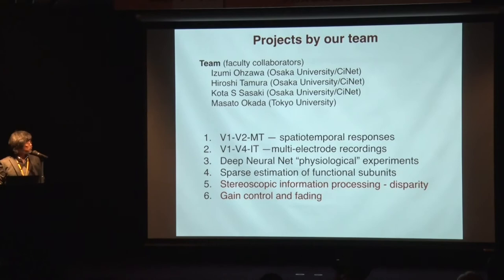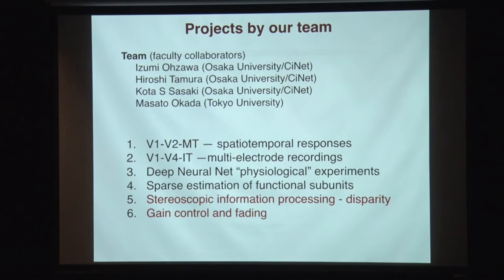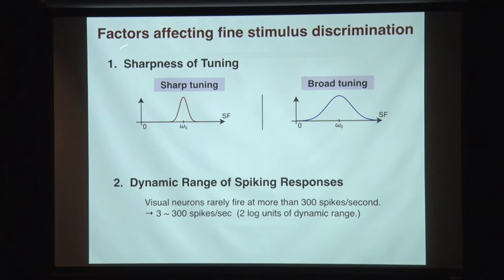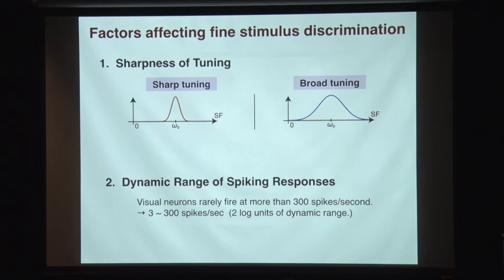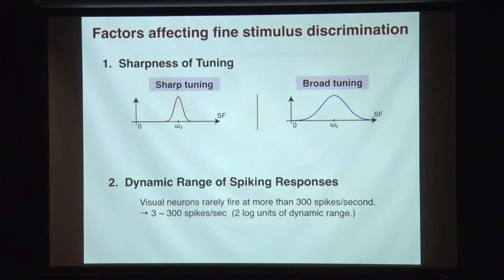I'll try to take you through the experiment and data. So these are the two points: factors affecting fine stimulus discrimination. The ability to discriminate stimuli will be very important for visual perception, and neurons are the basis of that. When you talk about discrimination, there are two factors.